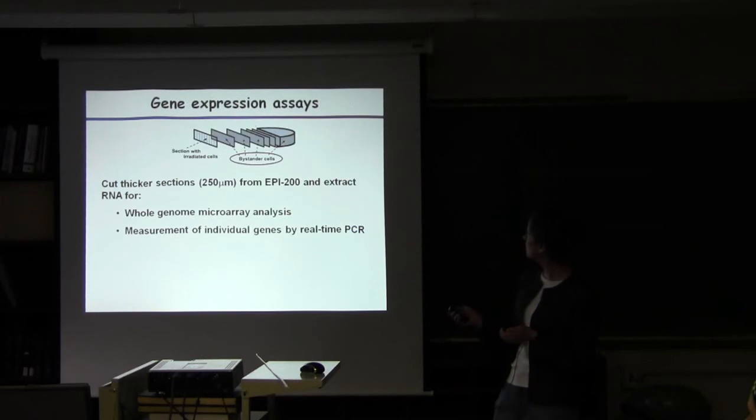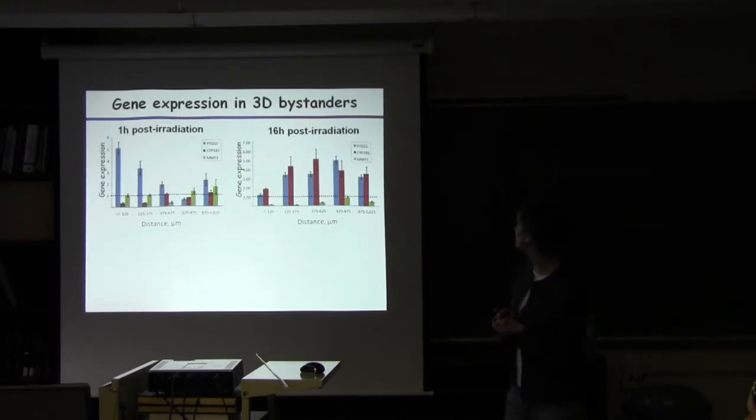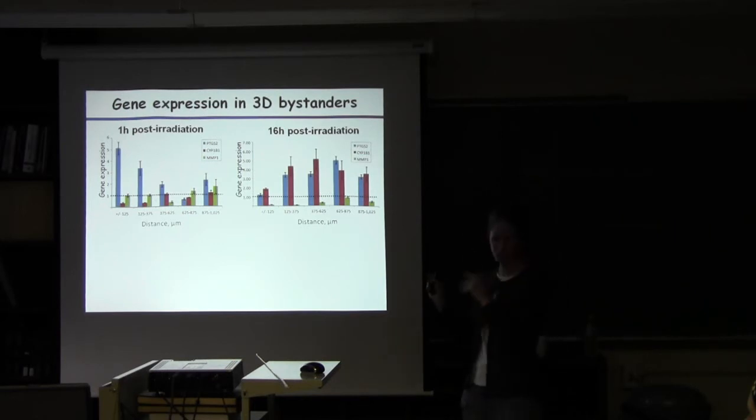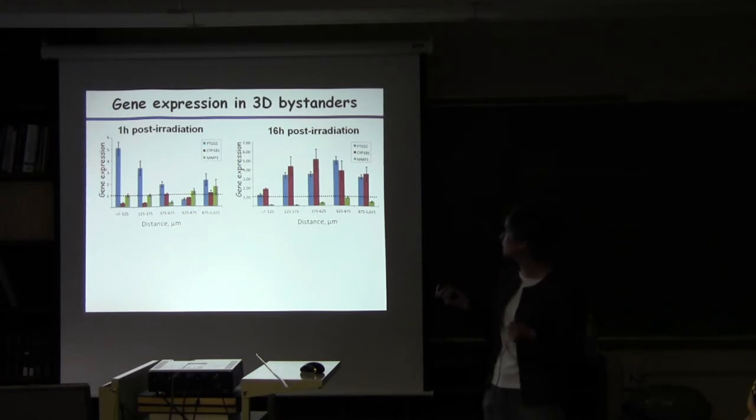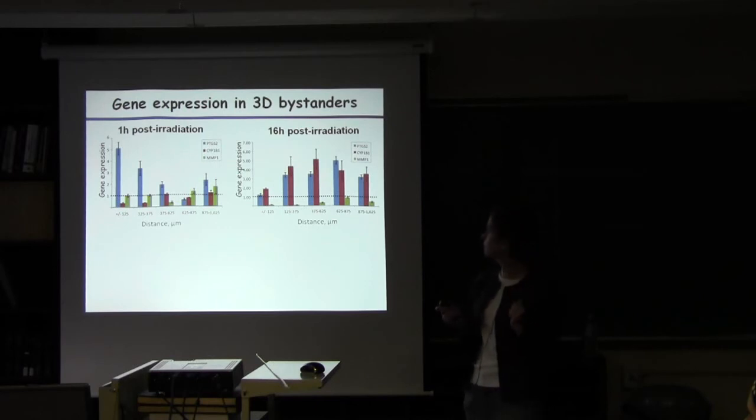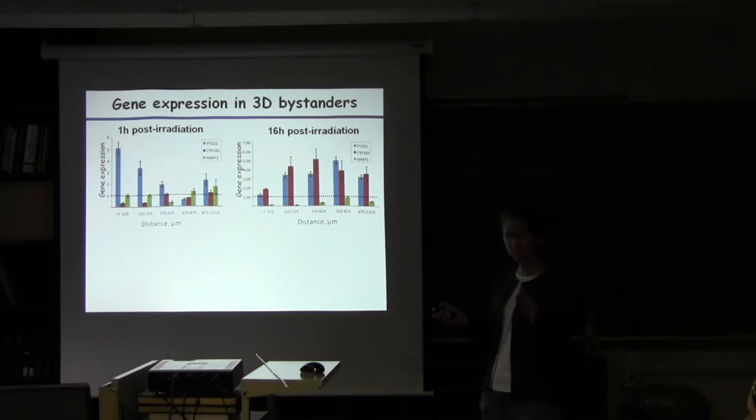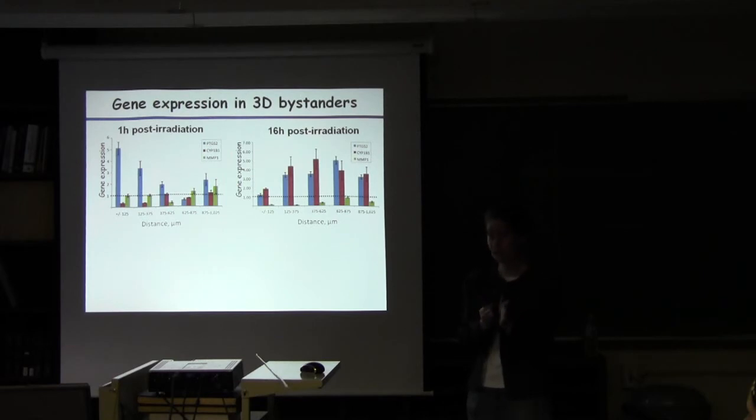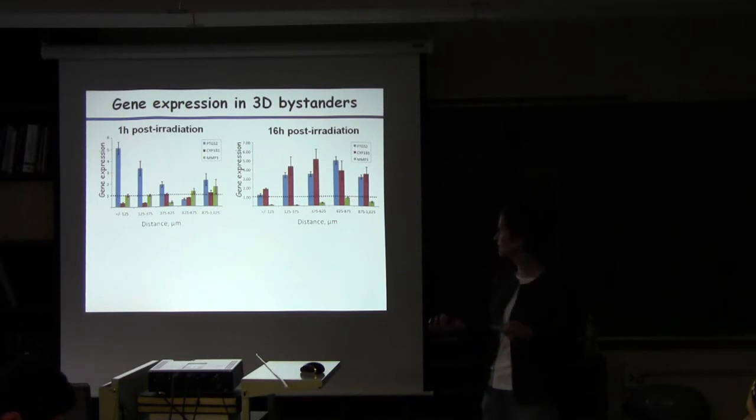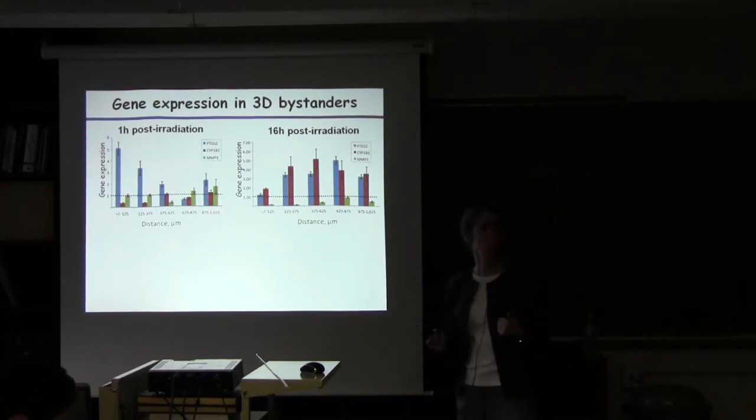So this is just comparing two time points that we looked at, one and 16 hours after the irradiation down the middle. And in this case we actually did measure that first section, so that first central segment that we cut off contains some irradiated cells and some bystanders, so it's a little bit hard to interpret. But I guess it got thrown in the mix anyway, so that's this first point on both of these. And then at increasing distances away from the plane of irradiation to this last section which is centered around a millimeter away from the cells that were irradiated.